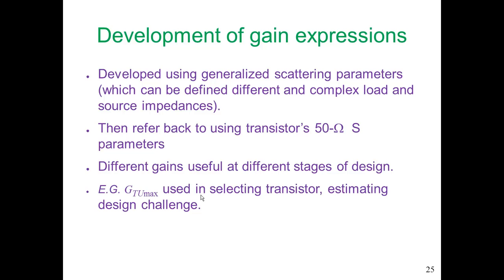Different gains are useful at different stages of design. The very first stage is choosing a transistor, and GTUmax — the maximum unilateral transducer gain — is a very useful metric for selecting a transistor. We look at a number of different transistors, estimate the unilateral transducer gain for each, and select a transistor based on that.